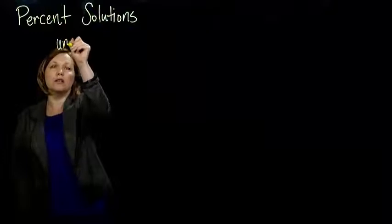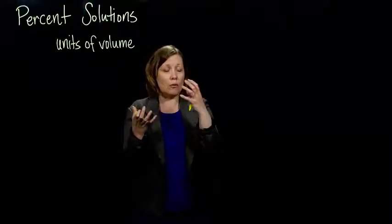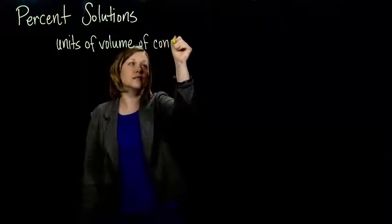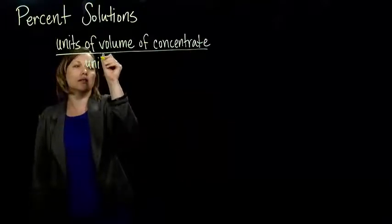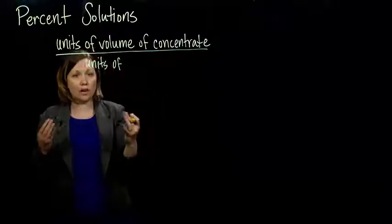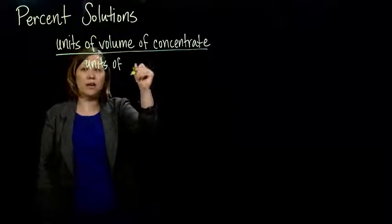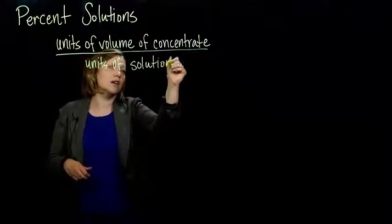There's some fancy notation that comes along with this. If we're talking about units of volume — so we have a volume of some kind of substance, and we're diluting it with something else that we measure in a volume, some other liquid — we have units of volume of concentrate in some units of our total volume. The solution is the mixture that we mixed up.